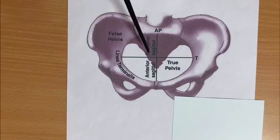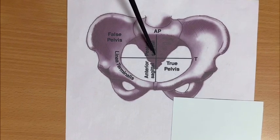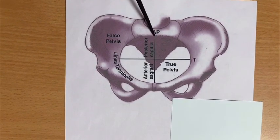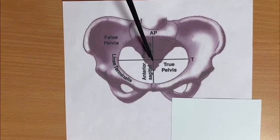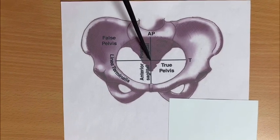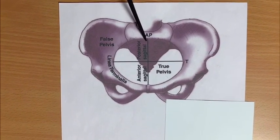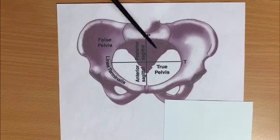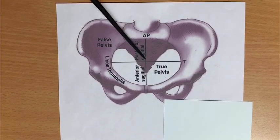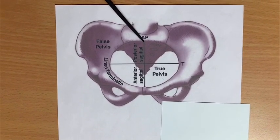Another diameter in the inlet of interest is called the posterior sagittal diameter, which runs from the sacral promontory to the point of intersection of the anteroposterior and transverse diameter. This measures around 4.5 cm, and as we go down into the cavity and the outlet, this posterior sagittal diameter progressively increases.